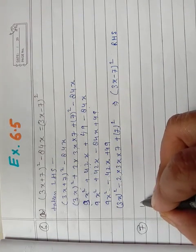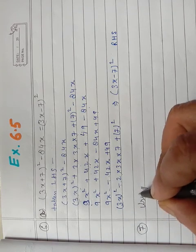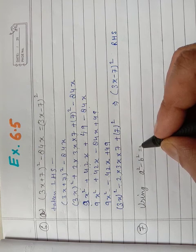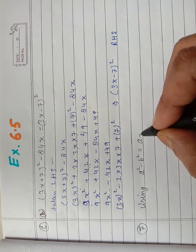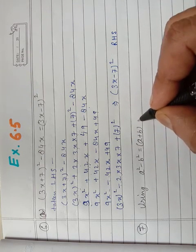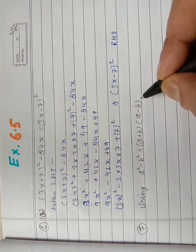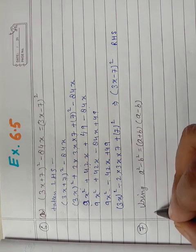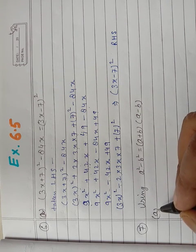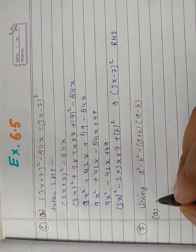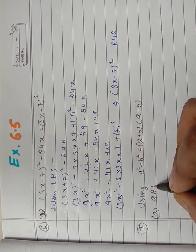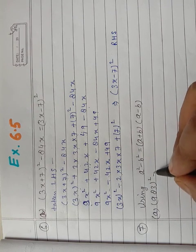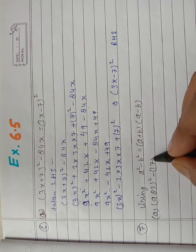Using a² - b², that is equal to (a+b)(a-b), we will use this identity and we want to find the value. We are doing part a, which is 983² - 17².